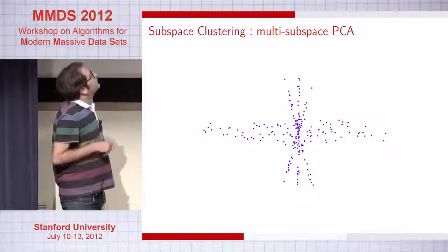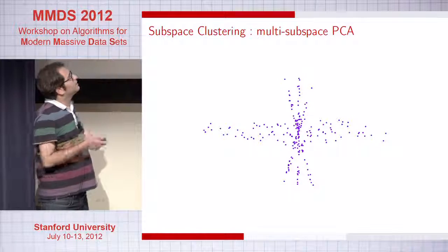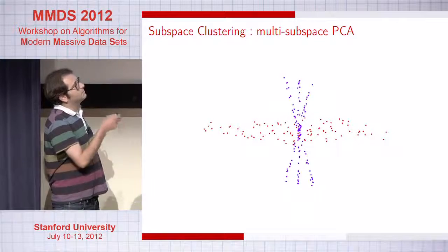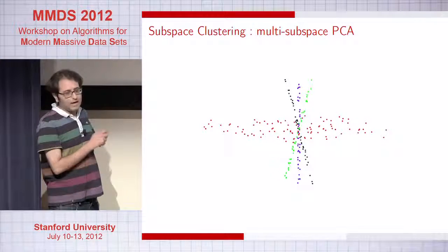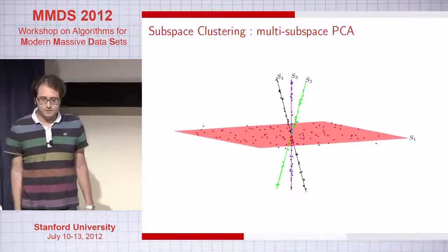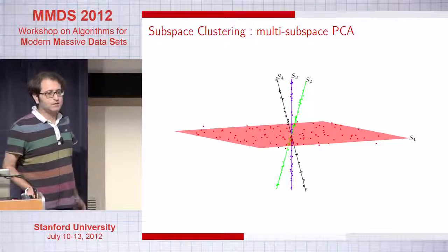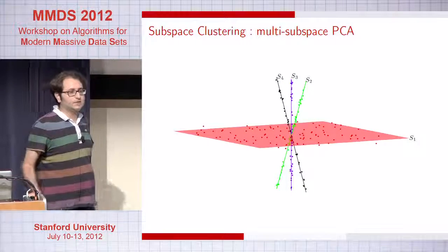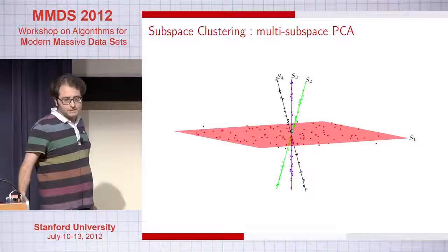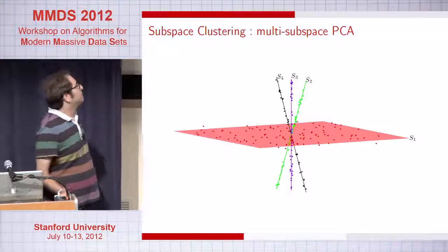In this case, the goal is to first cluster the data based on the subspaces they belong to, and then fit the correct subspace. This multiplicity assumption arises very naturally because it represents multiple categories in your data.